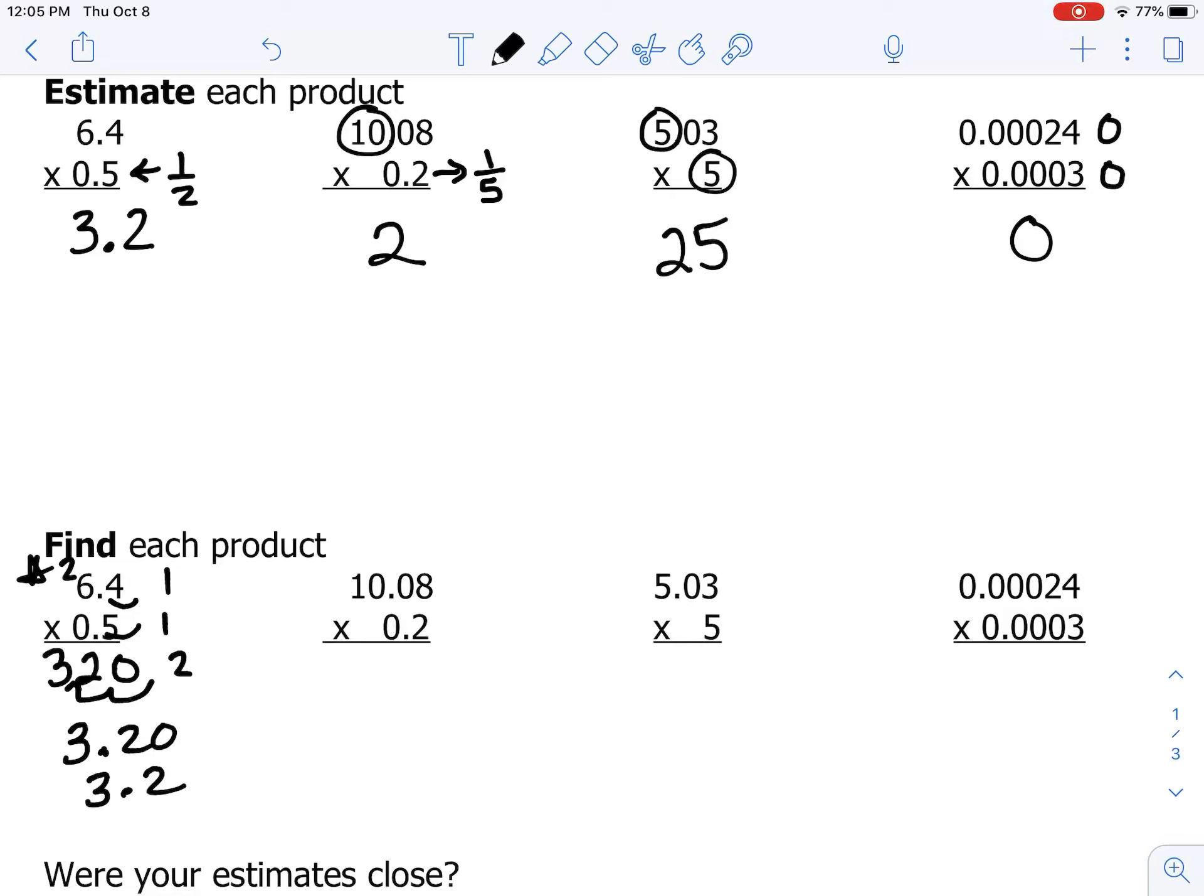Let's take a look at number two. I'm going to go ahead and multiply. 2 times 8 is 16, 2 times 0 is 0 plus 1 is 1, 2 times 0 is 0, and 2 times 1 is 2.